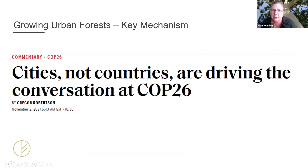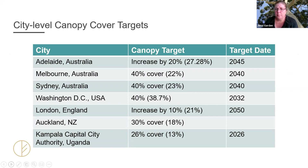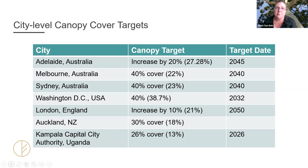One of the first things cities will do is go ahead and set their canopy cover target — their first way of demonstrating commitment to growing the urban forest. These targets are often quite ambitious. For example, Melbourne and Sydney are proposing to roughly double their canopy cover within the next 20 years, while Kampala Capital City Authority in Uganda — one of the newest recognised Tree Cities of the World — is proposing to double their canopy cover within the next five years.